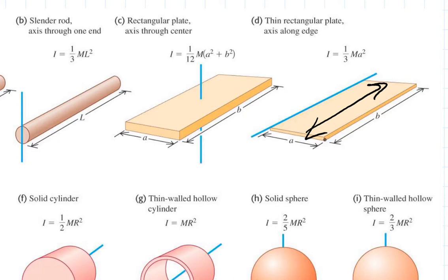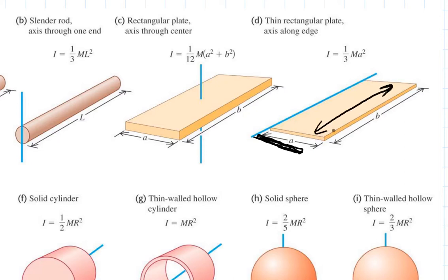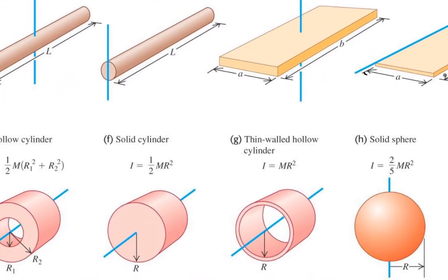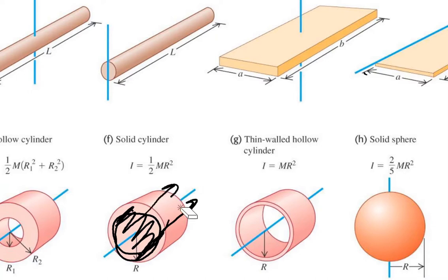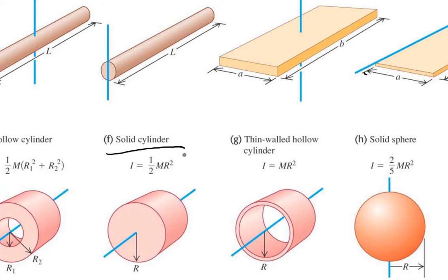What matters is how the mass is distributed about the axis of rotation. For this door and for a rod, the mass is distributed exactly the same way about the axis of rotation. If you spread it out along the axis of rotation, it doesn't matter. The same is true with a flat disc and a solid cylinder — the rotational inertia is one-half M R squared in both cases, because the mass is still distributed the same way about the axis of rotation.